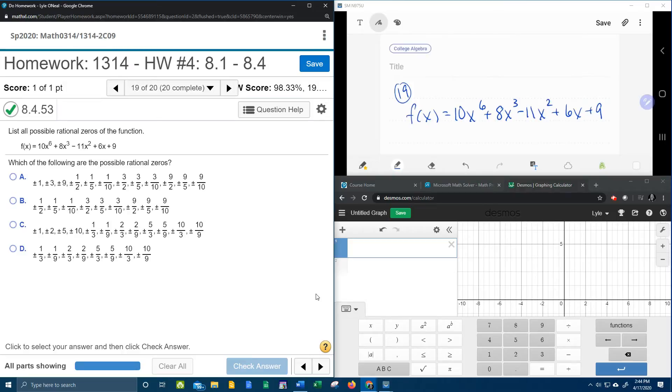All right, here we go. Number 19 for our college algebra homework number 4 in our MyLabMath. It says, list all possible rational zeros of the function.